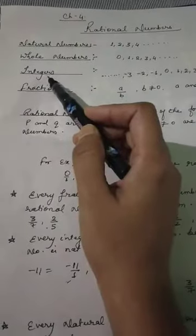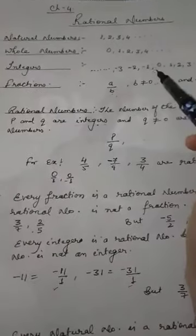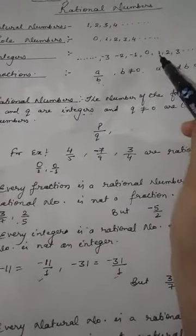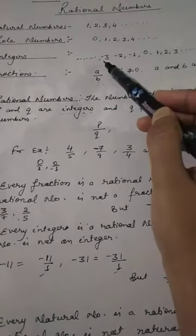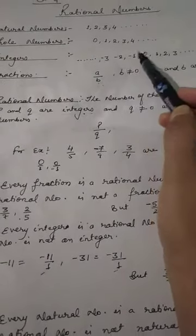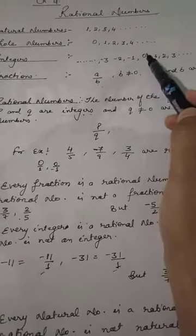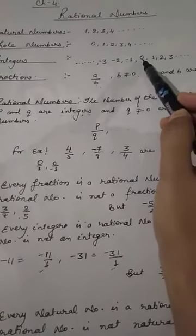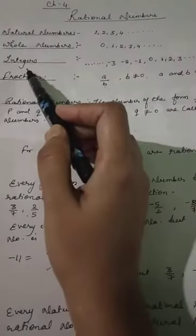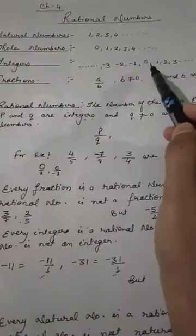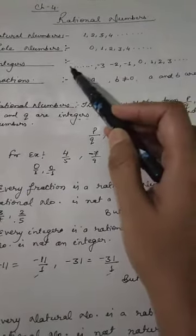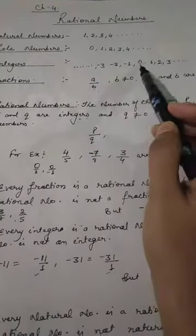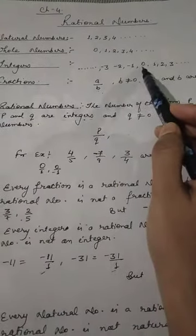What are integers? Integers are all positive and negative numbers including 0 — all positive numbers, all negative numbers, including 0.